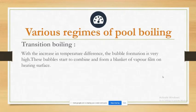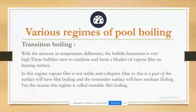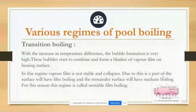Hello everyone, I am Jesh. I will explain various regimes of pool boiling. Transition boiling — with an increase in temperature difference, bubble formation is very high. These bubbles start to combine and form a blanket of vapor film on the heating surface. In this regime the vapor film is not stable, and due to this, part of the surface will have film boiling and the remainder will have nucleate boiling. For this reason, this regime is called unstable film boiling, as shown in the diagram.